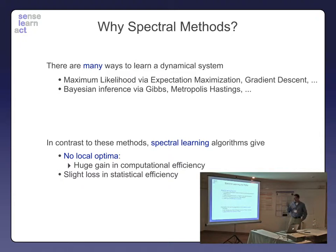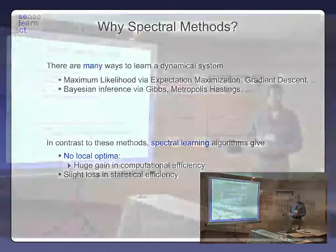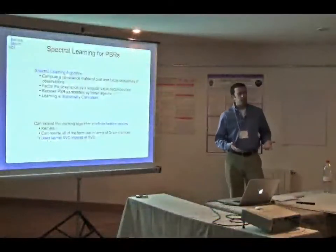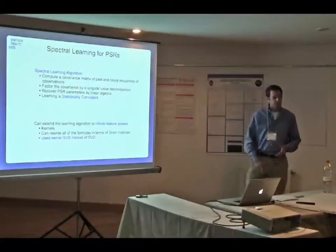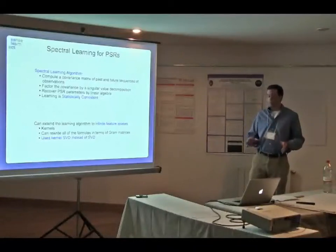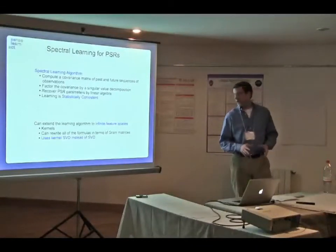I don't really have time to go into the details of these spectral approaches to learning PSRs, but I'll give you a very high-level view of how our learning algorithm works. First, we compute a covariance matrix of past and future sequences of observations. We then factor this covariance matrix by singular value decomposition, and we can then recover the PSR parameters just using some linear algebra. This learning algorithm is statistically consistent.